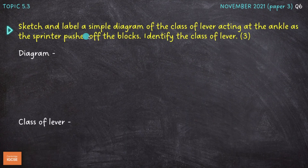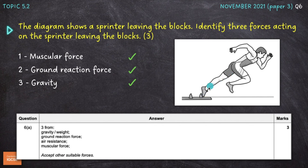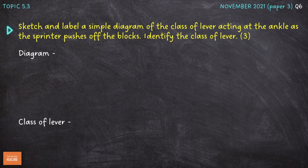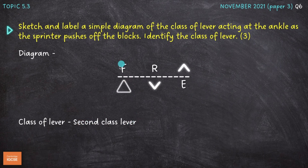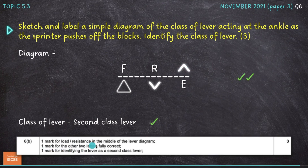The next question asks us to sketch and label a simple diagram of the class of lever acting at the ankle as the sprinter pushes off the blocks, and identify that class of lever. As the sprinter pushes off the blocks and plantar flexes at the ankle joint, we are using a second class lever. The fulcrum is the joint between the toes or the point of contact with the toes and the floor. The resistance or weight of the body is in the middle, and the effort from the gastrocnemius and soleus — the calf muscles — is at the other end. The mark scheme awards one mark for resistance in the middle, one for the other two labels correctly positioned, and one for identifying it as a second class lever.